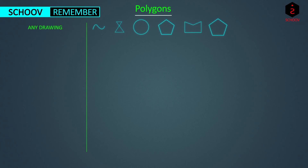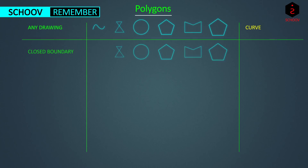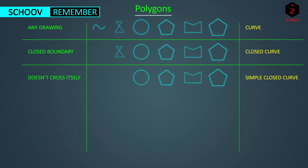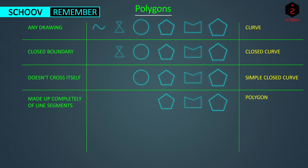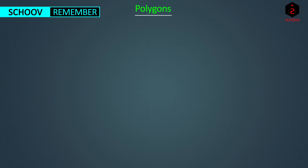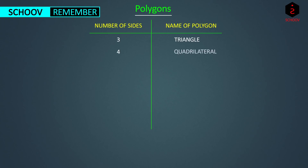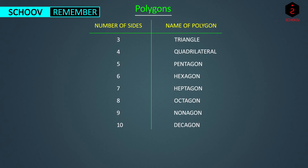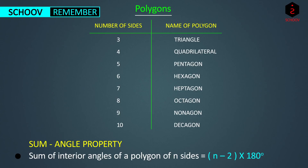To summarize: any drawing on a plane is a plane curve. Curves with the same start and end points are closed curves. Closed curves that do not cross themselves are simple closed curves. Those made completely of line segments are polygons. Polygons bent inside are concave polygons; those convex from outside are convex polygons. Polygons with equal sides are regular polygons. Polygons are named by number of sides: triangle (3), quadrilateral (4), pentagon (5), and so on. The angle sum property states that the sum of interior angles of an n-sided polygon equals (n − 2) × 180°. You can watch the second topic by clicking the video link on screen. Please like and subscribe!